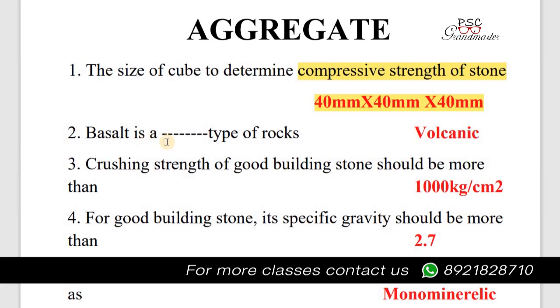Next question: Basalt is a dash type of rock. Answer: Basalt is a volcanic type of rock.